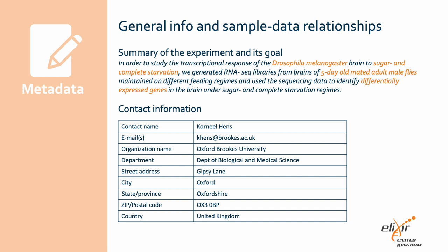First, let's look at the general information about the experiment and sample data relationships. This should include a summary of the experiments and its goals. Our example dataset aims to study the transcriptional response of the Drosophila melanogaster brain to sugar and complete starvation by generating RNA-seq libraries from brains of five-day-old mated adult male flies maintained on different feeding regimes. The sequencing data is used to identify differentially expressed genes in the brain under sugar and complete starvation.